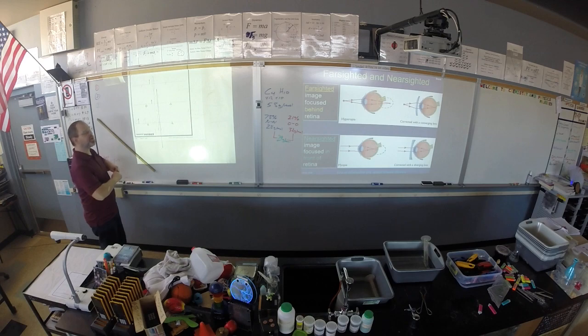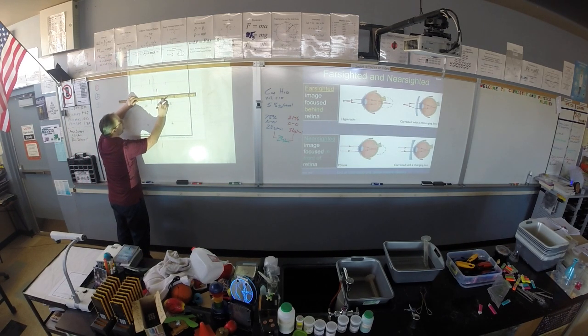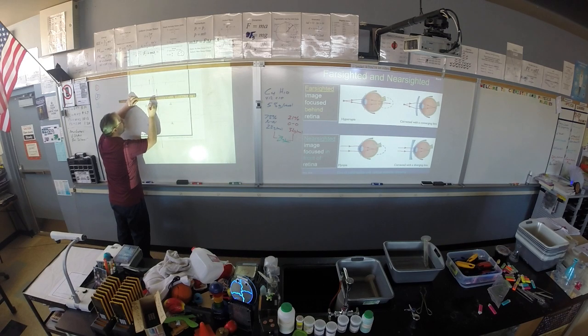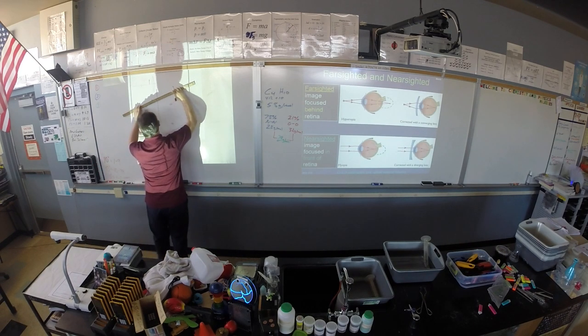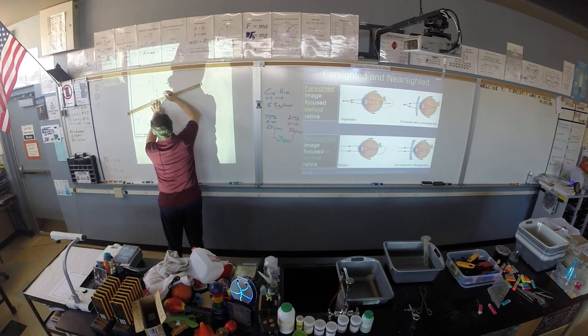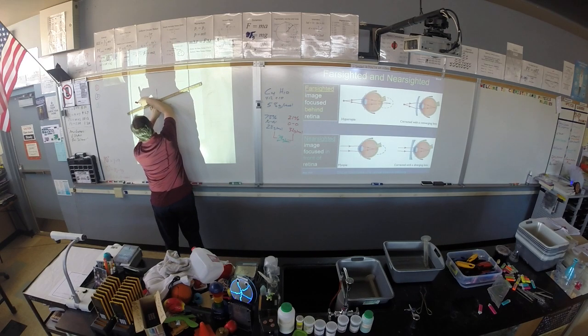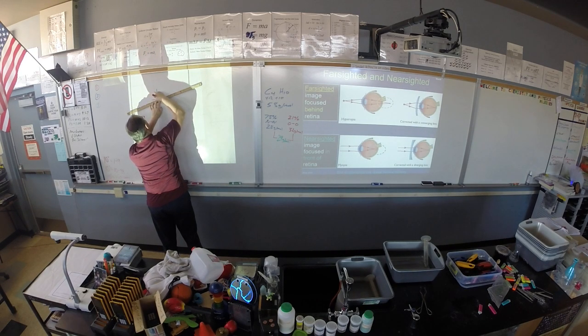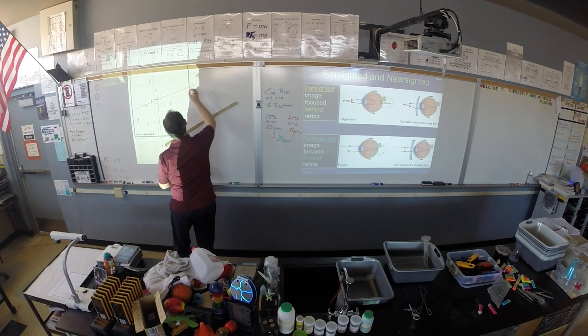Our first ray is parallel, then focal. So parallel to the principal axis, striking the normal, then you aim at the focal point. Now, the focal point you aim at is actually behind the lens. So this one is virtual, and this one is real.